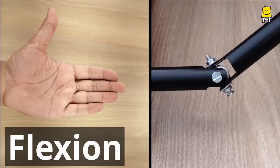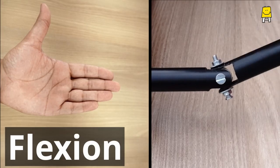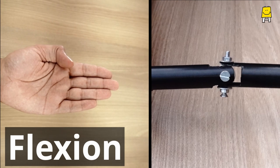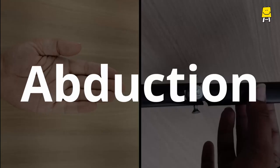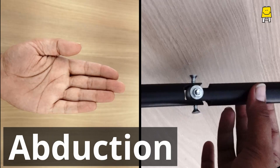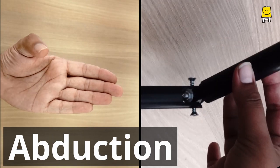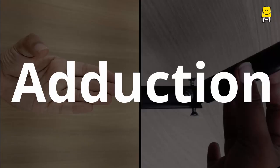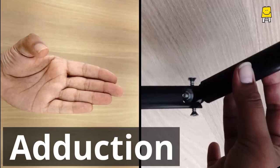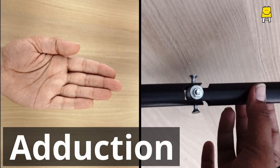Flexion, that is bringing it back to normal position. Abduction, that is to move the thumb above the line of the palm. Adduction, that is to bring it back to normal position.